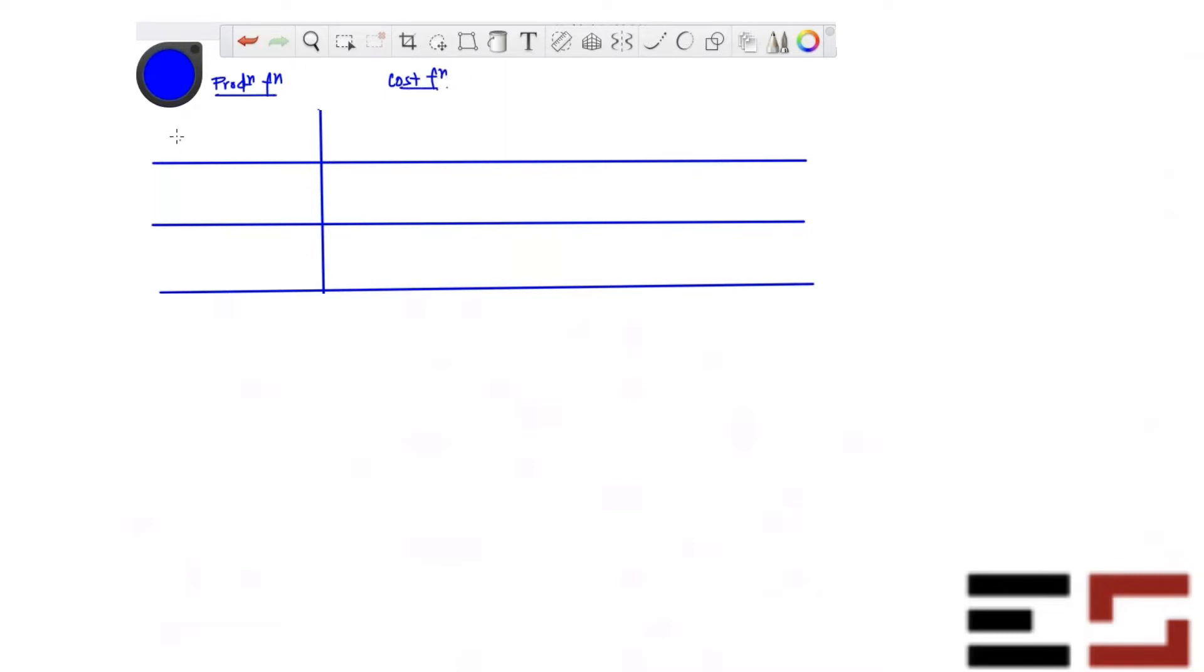Okay, so suppose the production function is minimum of L, K. You have to find the cost function associated with this production function. Then do the same thing for this production function: minimum of L square, K square. And also do this for minimum of root L, root K. Okay, do this. You have five minutes.